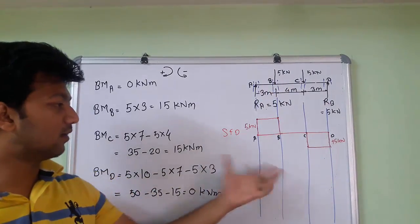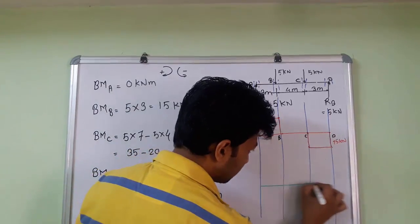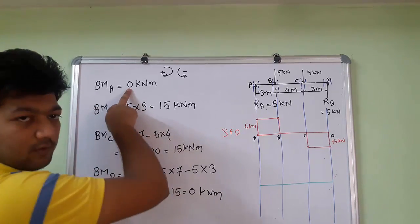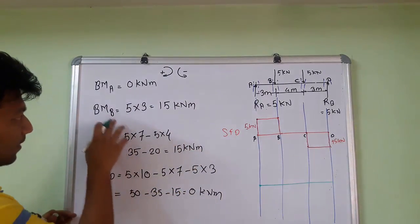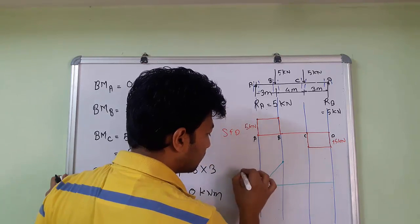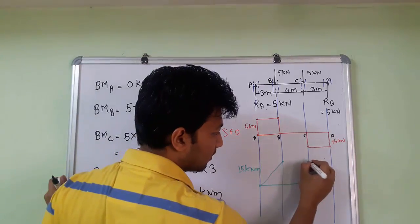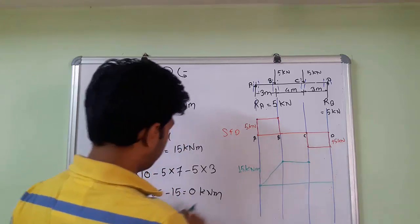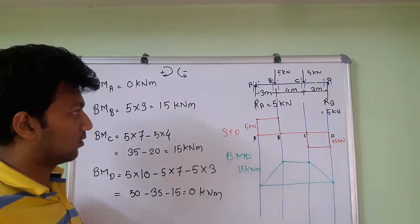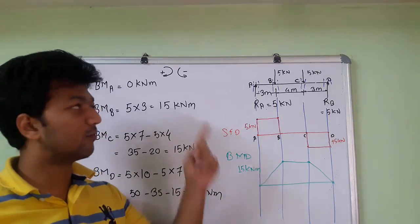Now we draw the bending moment diagram. At point A it is 0 kN·m. At point B it is 15 kN·m. At point C it is again 15 kN·m. At point D it returns to 0 kN·m. This is the BMD of this diagram. Remember, the sign convention is most important in this section. For notes and more about BMD and SFD, click on the above link.